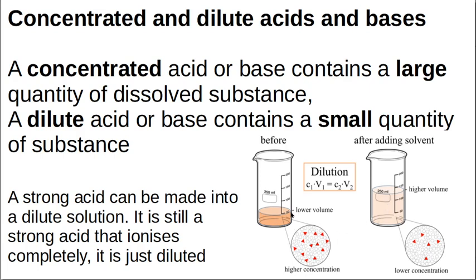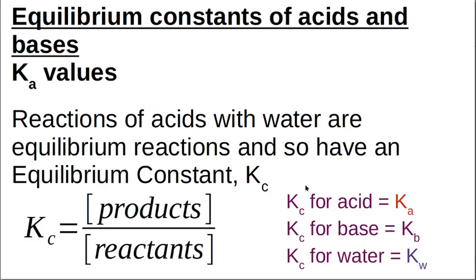If you put a weak acid in there, there's not going to be a lot of protons, even though there's only acid in the solution. One of the ways we can look at how strong an acid is, is by using a Ka value — the equilibrium constant for acids. All acids when they ionize with water are considered equilibrium reactions.